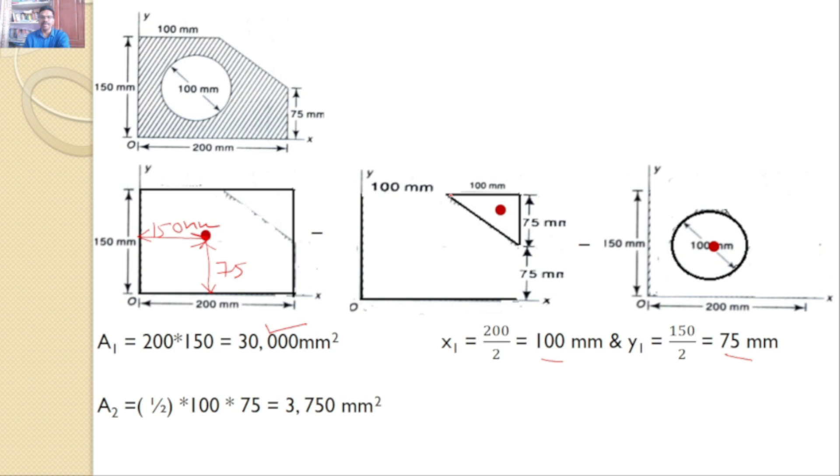Next take this right angle triangle. Second area, that is half base into height. Because it is a right angle triangle, the area is half base into height. Half base value is 100, height value is 75. So half 100 into 75 which gives the value of 3,750 mm squared.